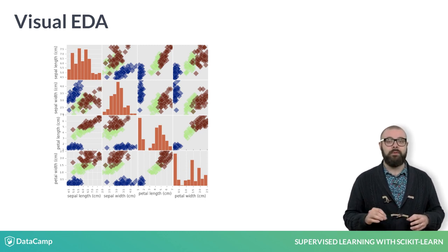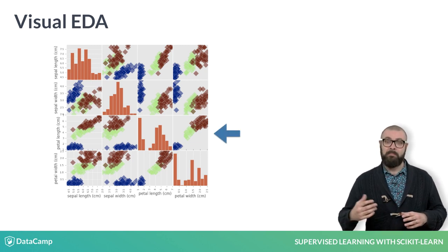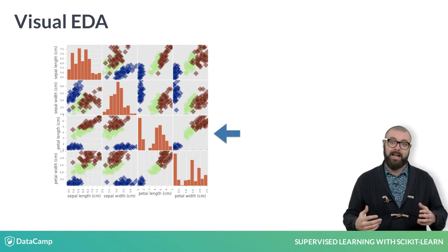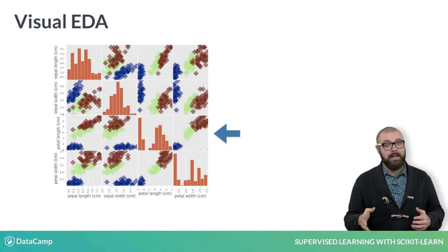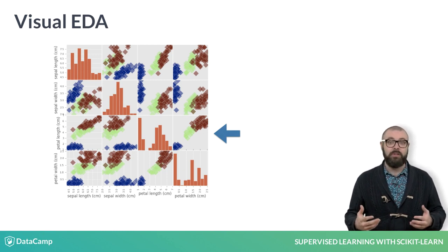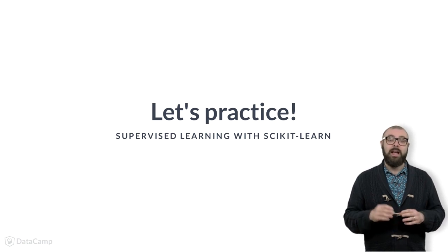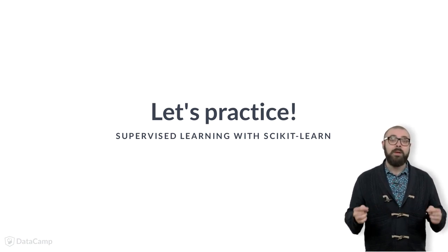The off-diagonal figures are scatter plots of the column feature versus row feature colored by the target variable. There is a great deal of information in this scatter matrix. See here, for example, that petal width and length are highly correlated, as you may expect, and that flowers are clustered according to species. Now it's your turn to dive into a few exercises and to do some EDA. Then we'll be back to do some machine learning.